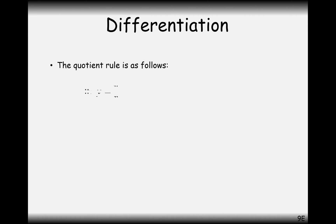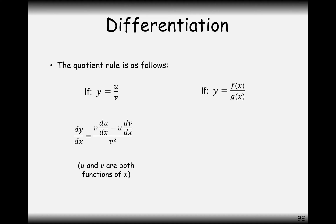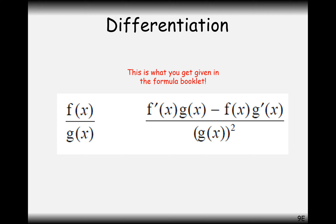As a summary: if we have y equals f(x) over g(x), then the rule is f′(x)·g(x) minus f(x)·g′(x), all over g(x) squared — so that's the g function squared on the bottom. The quite good thing about this one is that you get it in the formula booklet, written exactly like this, so it's useful to have practice using the quotient rule in this notation.